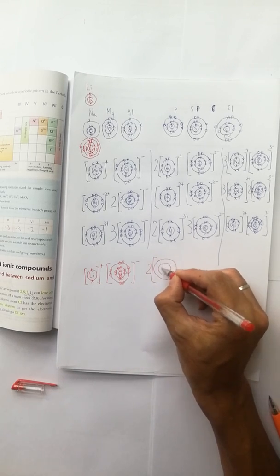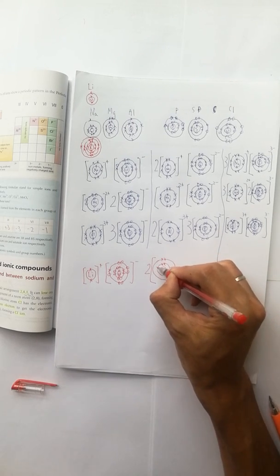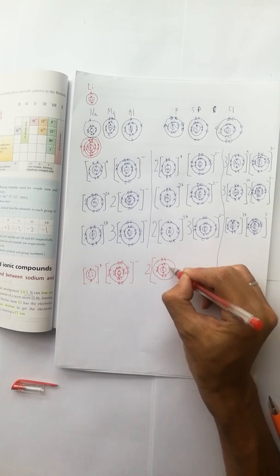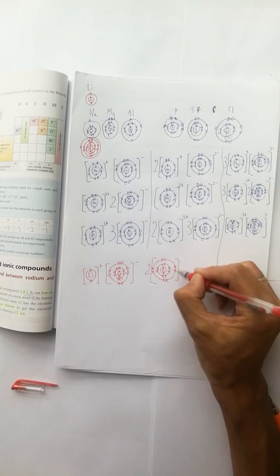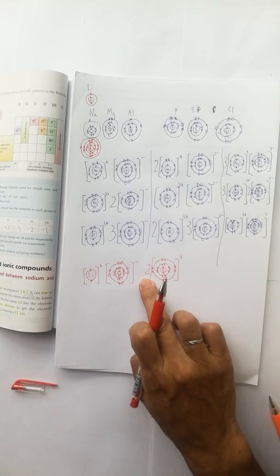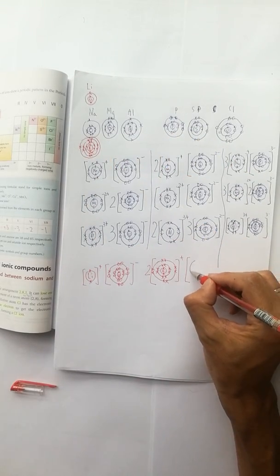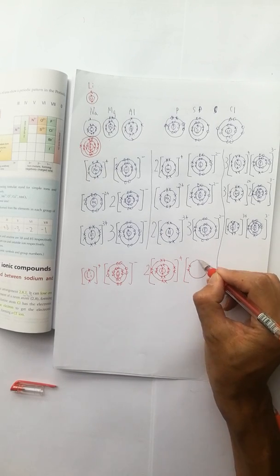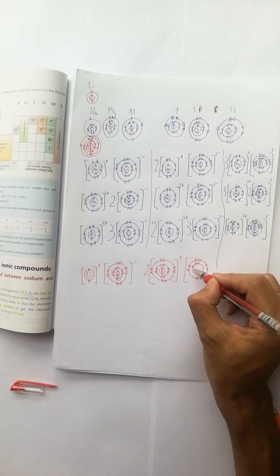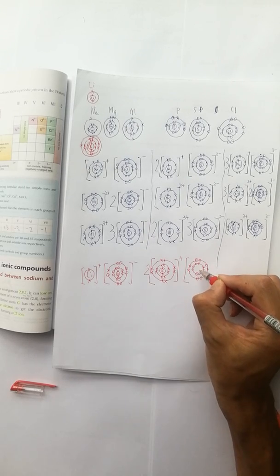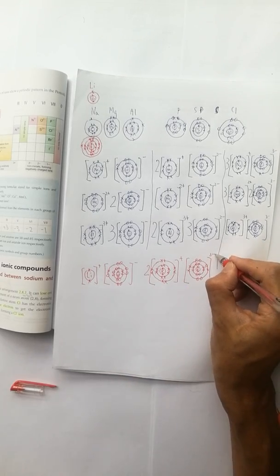For the K, it has 3 electron shells, 1 plus. And we need to have 2K losing totally 2 electrons and go to the sulfur. 2K. It is the compound formed in between K and S.